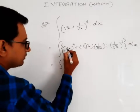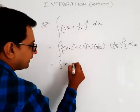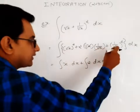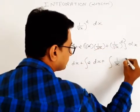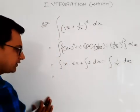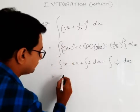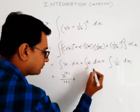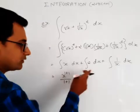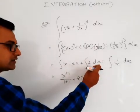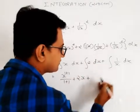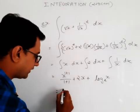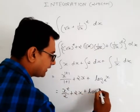Term by term, one by one: integration of x dx — x raised to 1, so x raised to 1 plus 1 divided by 1 plus 1 — plus integration of 2 dx — so 2x — plus integration of 1 upon x dx. So the answer is: x squared by 2, plus 2x, plus log x base e.